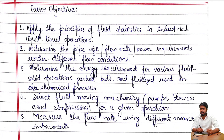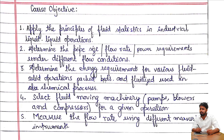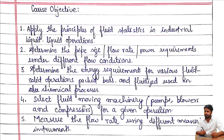The second course objective is to determine the pipe size, flow rate, and power requirements under different flow conditions. The third is to determine the energy requirements for various fluid-solid operations, packed beds and fluidized beds used in chemical process industries.